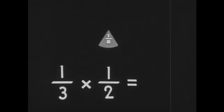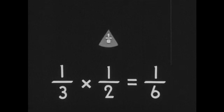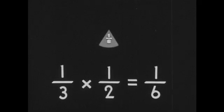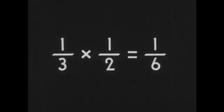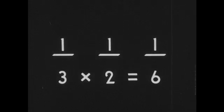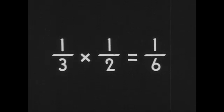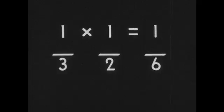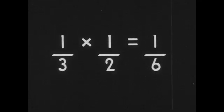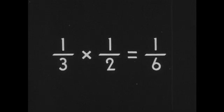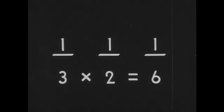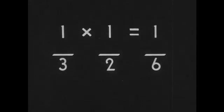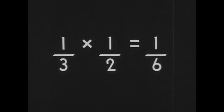But we cannot work all of our problems by cutting up discs and comparing the size of the parts — we do not have to. There is an easy rule for multiplying fractions. By cutting up discs we just saw that one third times one half equals one sixth. We multiply the denominators together: three times two equals six. We multiply the numerators together: one times one equals one. So the rule is: multiply the denominators of our fractions together to get the denominator of our answer, and multiply the numerators together to get the numerator of our answer. It is an easy one to remember.